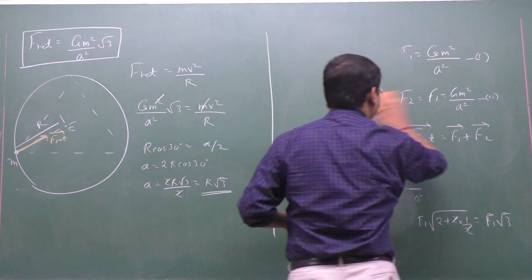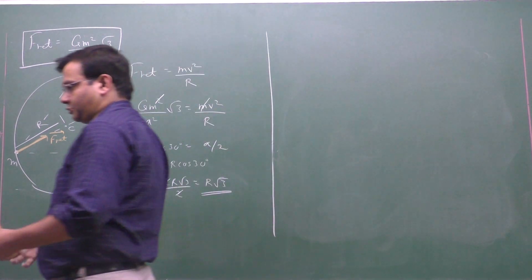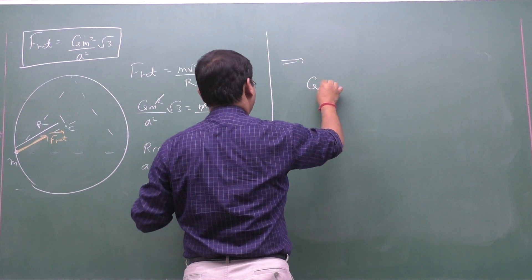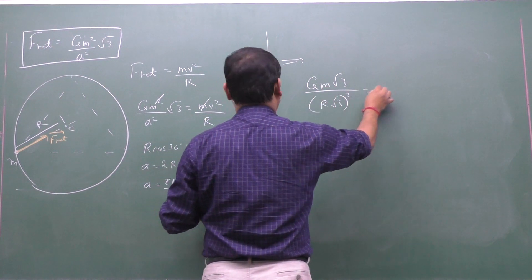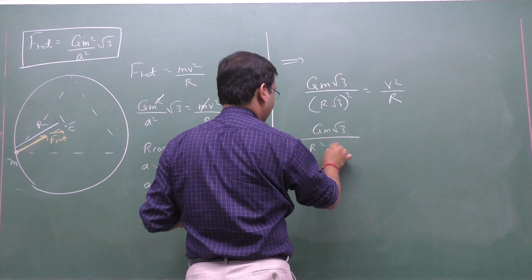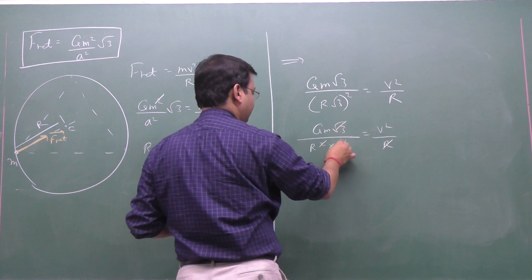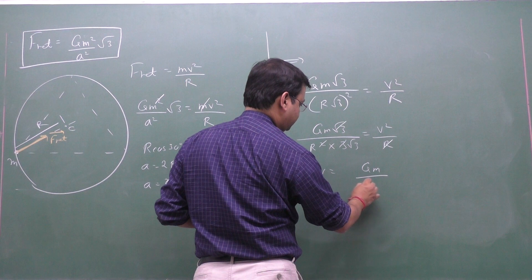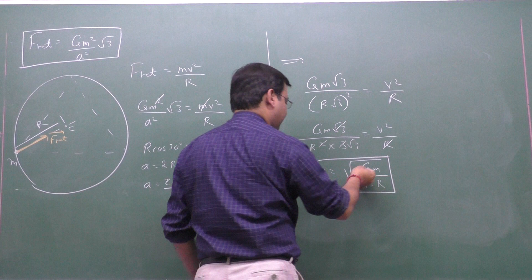Substituting a = R√3 into the centripetal force equation: √3·Gm/(R√3)² = v²/R. After cancelling and simplifying, the speed of the particle comes out to be v = √(GM/√3·R).